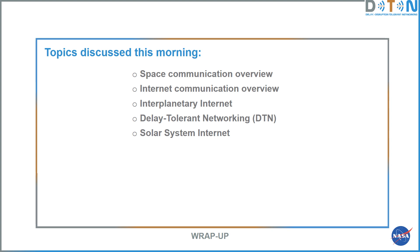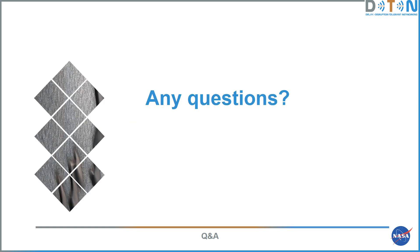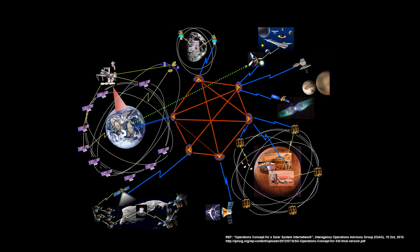To summarize, we went through an overview of space communications, then an overview of internet communications, how they relate, what interplanetary internet would look like, how DTN aims to achieve interplanetary internet communications, and what the resulting solar system internet could be. Another segment will be available shortly.